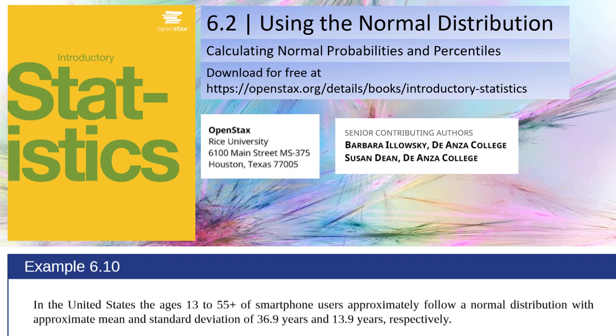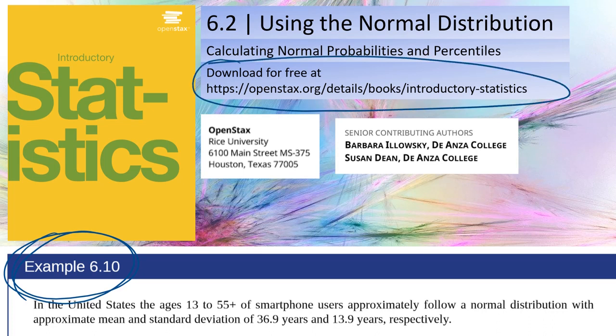In this video, I'm going to be discussing how to calculate normal probabilities and percentiles using example 6.10 from the Introductory Statistics OpenStats book, which is available for free via this link. I'm going to be using Excel as my calculator. If you want step-by-step instructions of how to use a graphing calculator, they do go through that in this textbook. The steps to using Excel are very similar to using the graphing calculator.